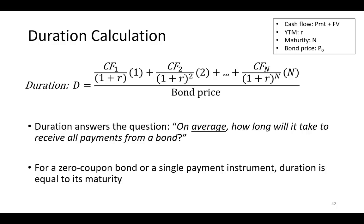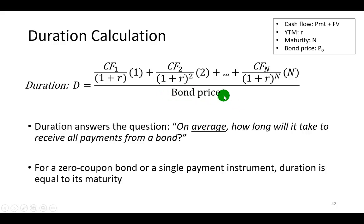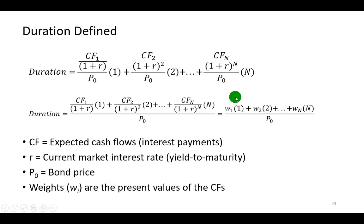To calculate duration, we simply multiply the present value of each cash flow to be received by the time during which that cash flow is received, sum them up, and then divide by the price of the instrument. Alternative definitions are presented here, but they all are identical.